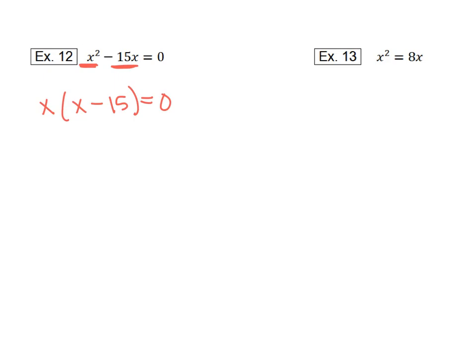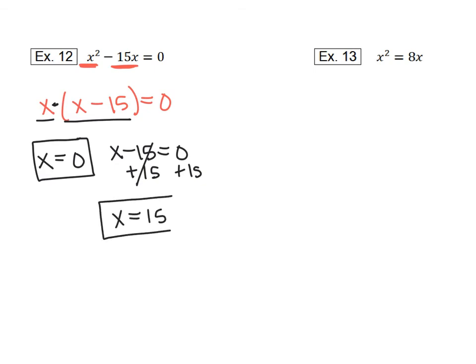Alright, so now that it's factored, we do have two factors here. You have x times x minus 15. So those are both factors, and we can set them both equal to 0. So we're going to say x equals 0, and x minus 15 equals 0. So x equals 0, that's already solved. Kind of nice, that one's done. This next one, we can go ahead and add 15 to both sides, leaving us with x equals 15. And those are our two answers.